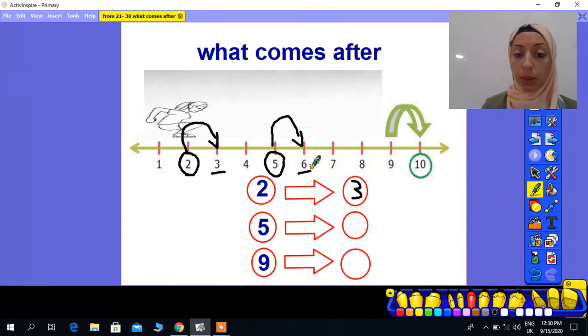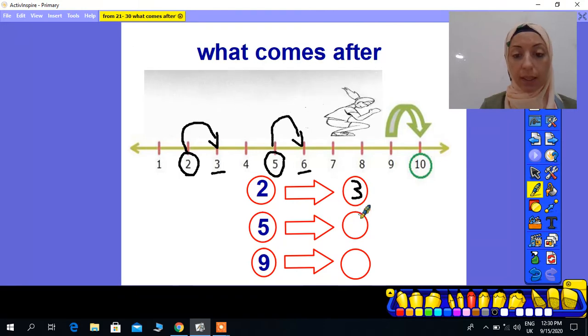Move one step to the number after, to the right. Move one step to the right will give me the number after. So after 5, 6. Super, KG2.